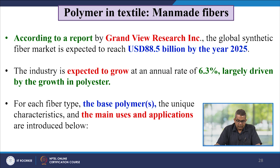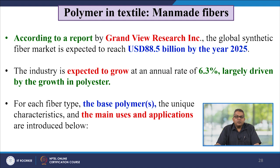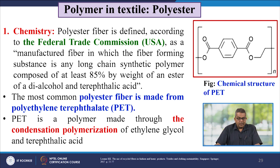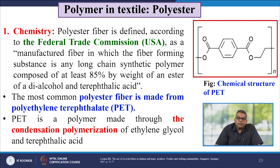According to a report by Grandview Research, the global synthetic fibre market is expected to reach about 88.5 billion dollars by 2025, growing at an annual rate of 6.3%, largely driven by polyester. For polyester, it is defined by the Federal Trade Commission as a manufactured fibre in which the fibre-forming substance is any long-chain synthetic polymer composed of at least 85% by weight of an ester of a di-alcohol and terephthalic acid.